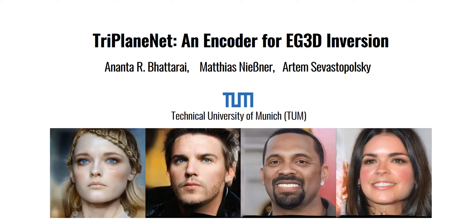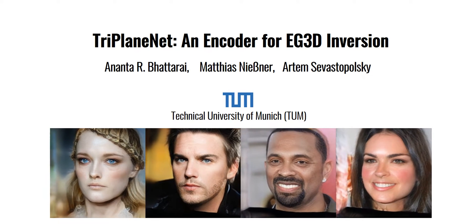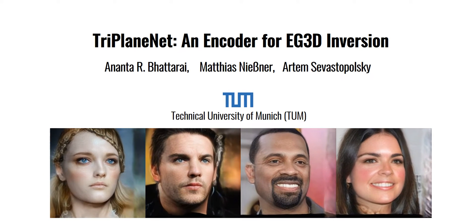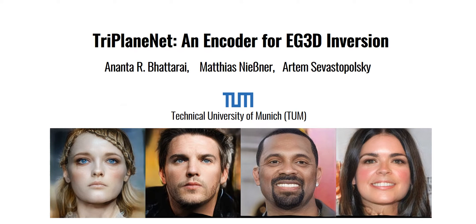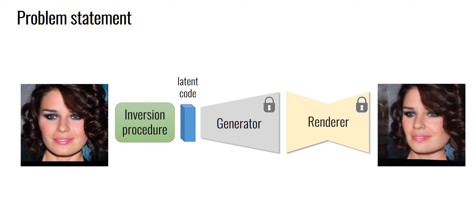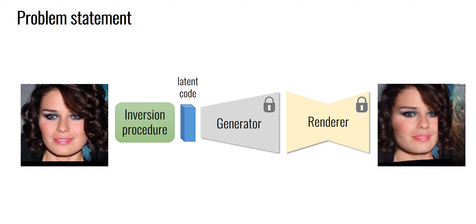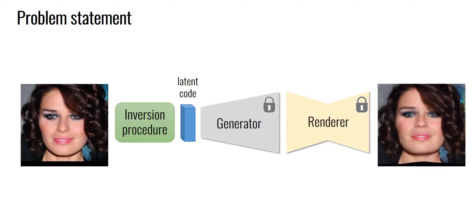We present TriplaneNet, an encoder for EG3D inversion. Given an input image, GAN inversion techniques try to infer the latent code in the GAN space that best represents the input image. Compared to 2D GAN inversion, doing the same in 3D is a challenging task, as the inversion needs to both preserve the identity of an input image and satisfy the 3D consistency constraint in generated novel views.